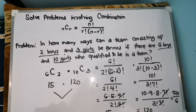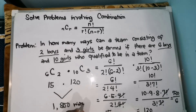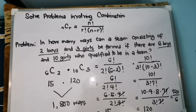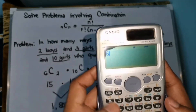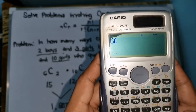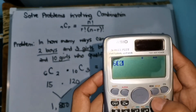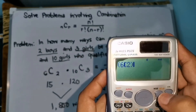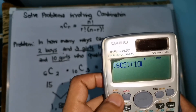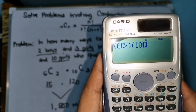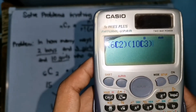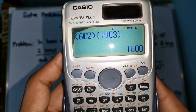Then you multiply the two results: 120 times 15 equals 1,800. So there are 1,800 ways. Let's check using the calculator: press C(6,2) times C(10,3) — the result is 1,800 ways. Confirmed.